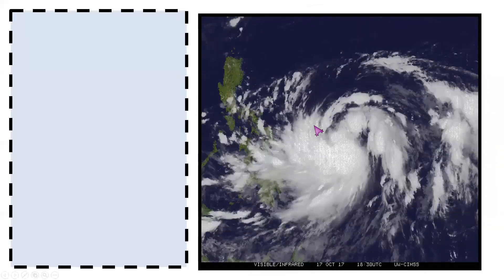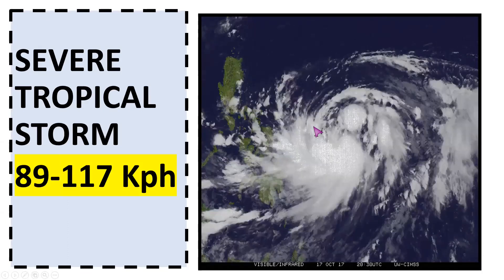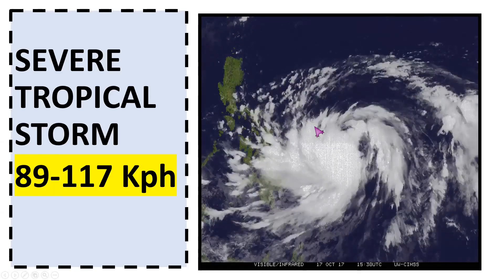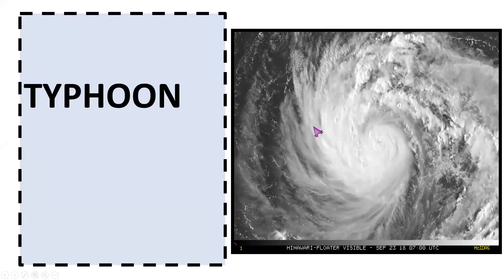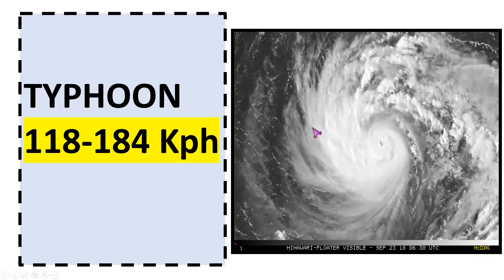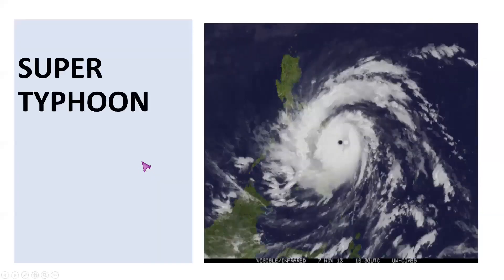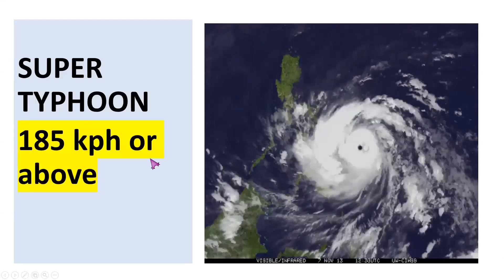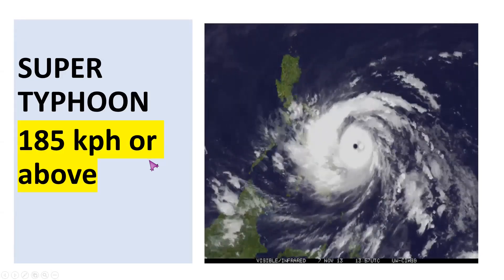The next category is severe tropical storm, wherein the wind speed is 81 to 117 km per hour. Next is the typhoon category, wherein the wind speed is 118 to 184 km per hour, and the system is classified as a typhoon in the Pacific. Lastly, if the wind escalates to 185 km per hour or above, it is called a super typhoon.